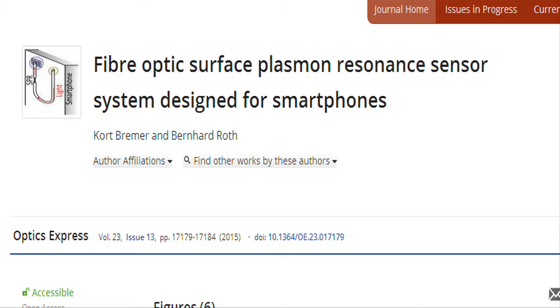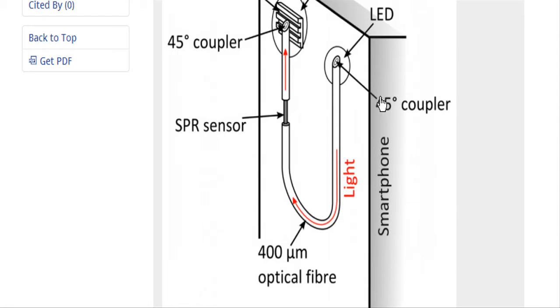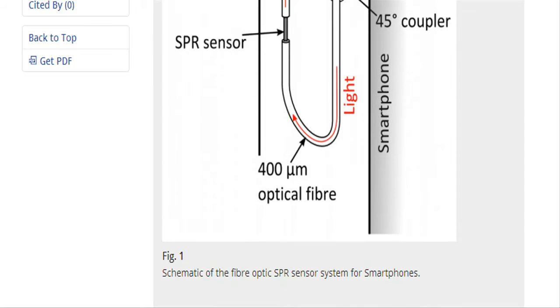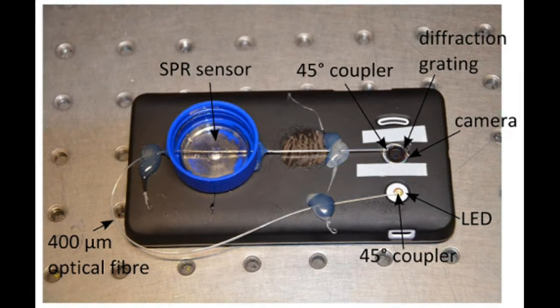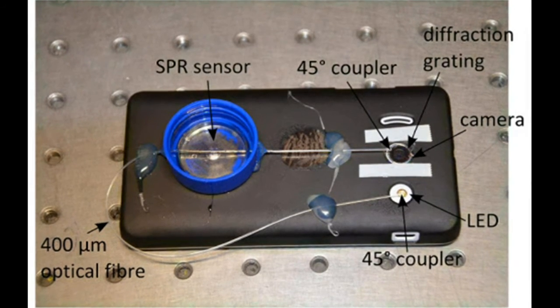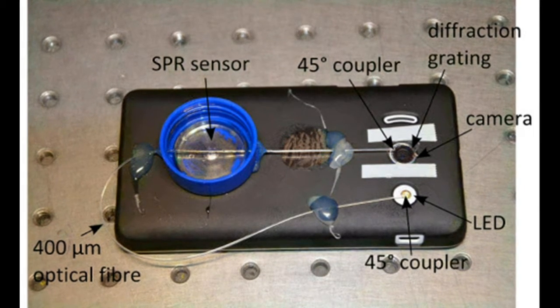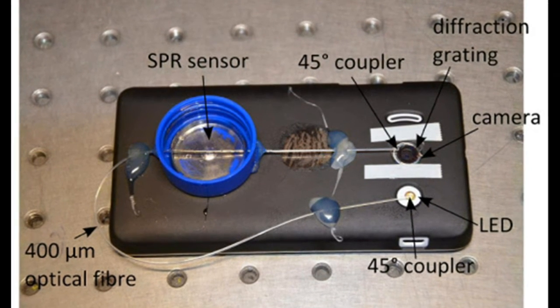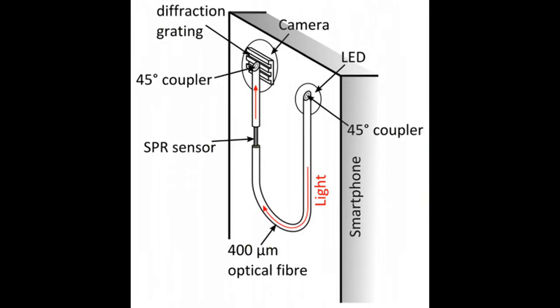Researchers at the University of Hanover, Germany have developed a self-contained fiber optic sensor for smartphones with the potential for use in a wide variety of biomolecular tests, including those for detecting pregnancy or monitoring diabetes.